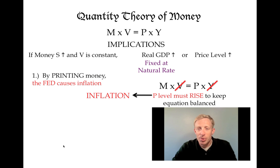The second implication is the classical dichotomy. The classical dichotomy says that nominal variables cannot affect real variables. So by increasing the money supply, the Fed can't affect real output.